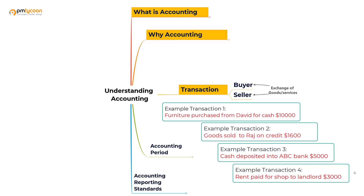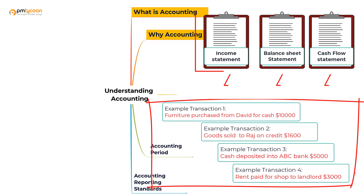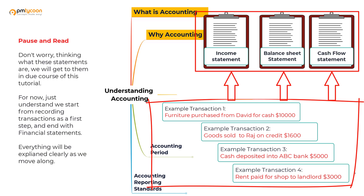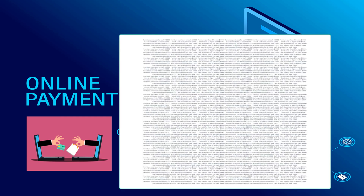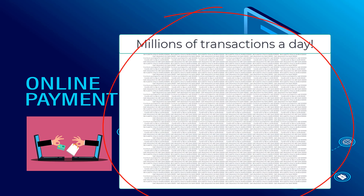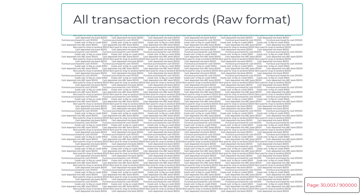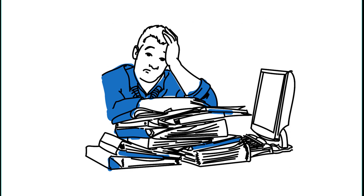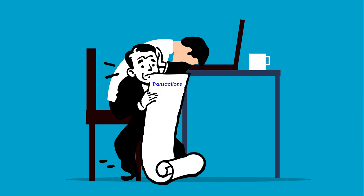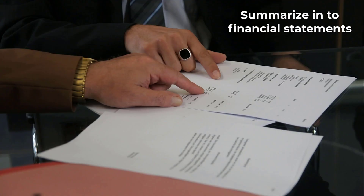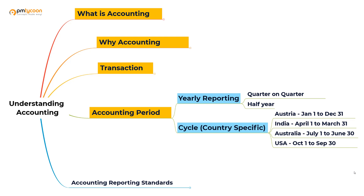We then summarize all of these transactions or exchanges happening in the business into statements over a period of time. Just imagine the number of transactions a multi-billion dollar business can have. If you gave all those raw financial records to investors or government authorities without summarizing them, they would spend their entire life figuring out whether the company made any profit. The reason we summarize them into financial statements is to make them easy to understand, and there are certain standards we need to follow while doing so.